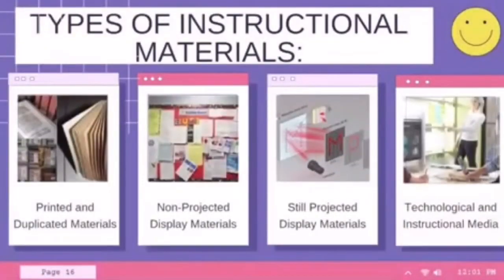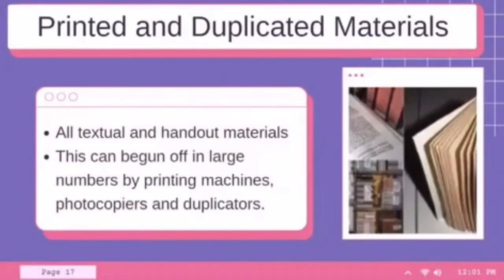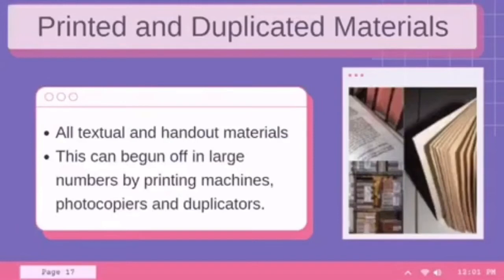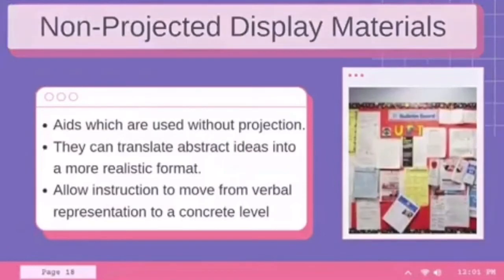Moving on, we have the four types of instructional materials: printed and duplicated materials, non-projected display materials, still projected display materials, and technological and instructional media. Printed and duplicated materials comprise all textual and handout materials to be used by students or trainees, which can be produced in large numbers by printing machines, photocopiers, and duplicators. Non-projected display materials are aids used without projection. They can translate abstract ideas into a more realistic format and allow instruction to move from verbal representation to a concrete level.